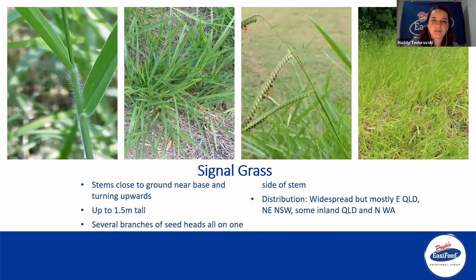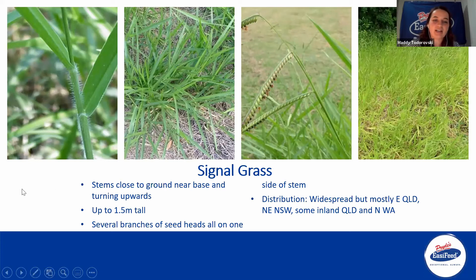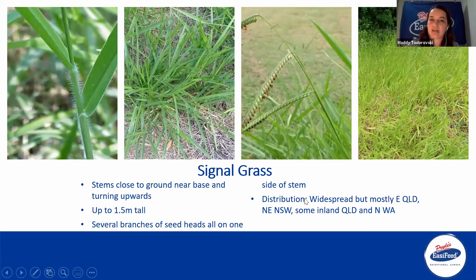Signal grass is similar to paspalum — the seed heads have several branches all on the same side of the stem, so it looks very similar to paspalum from a distance. The stems start close to the ground near the base and turn upwards. They grow up to 1.5 meters tall and are quite widespread, mostly in eastern Queensland and northeast New South Wales, with some further inland.